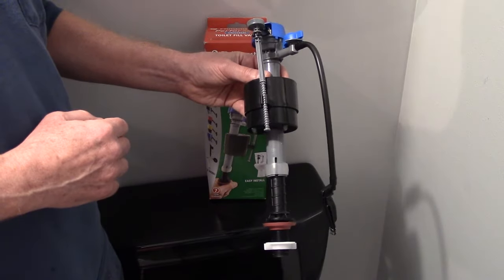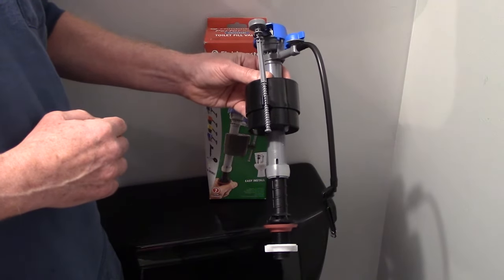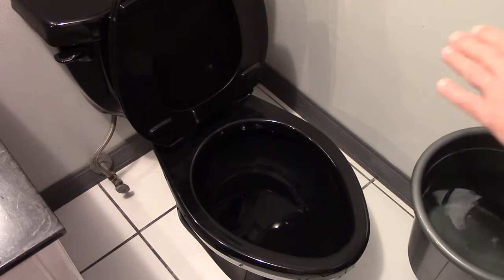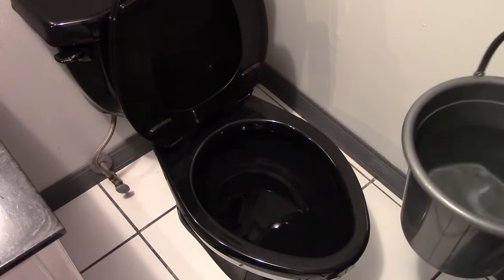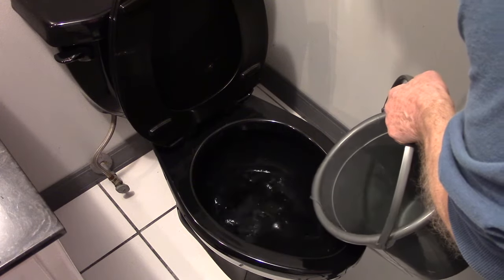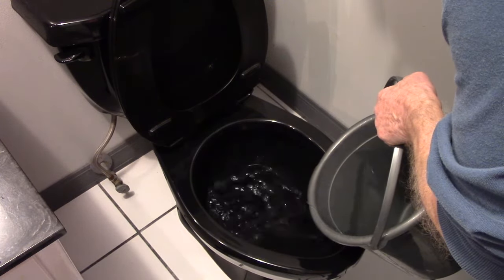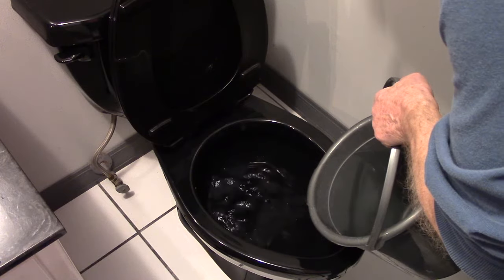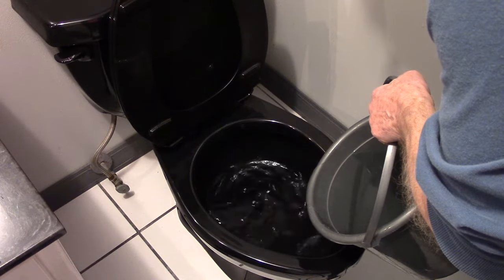If you don't have enough water in the bowl, it will not flush properly. To figure out the height of the water in the bowl, take a bucket and slowly pour water into the bowl until it stops rising. If you pour it in too fast, it will just flush the bowl. So pour water in slowly.